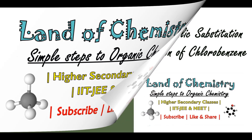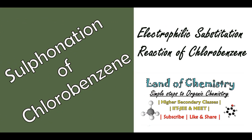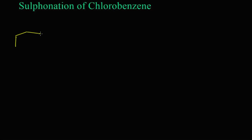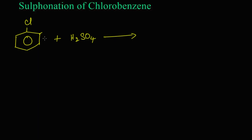Welcome to Land of Chemistry. In this video we are going to learn the sulfonation of chlorobenzene. Here, chlorobenzene is going to react with concentrated sulfuric acid, H₂SO₄. There are two possibilities for the reaction: one is in the ortho position and another is in the para position, because chlorobenzene is an ortho and para directing group.